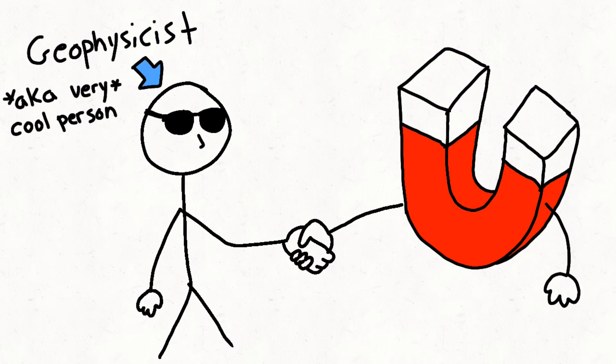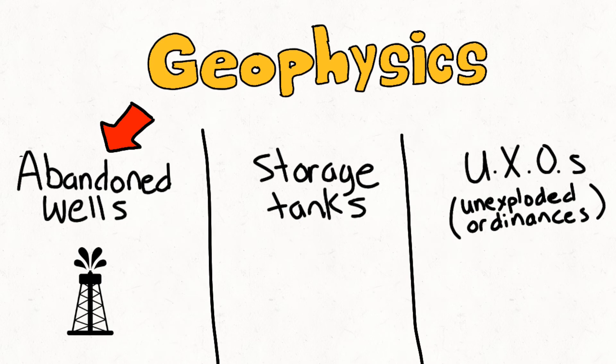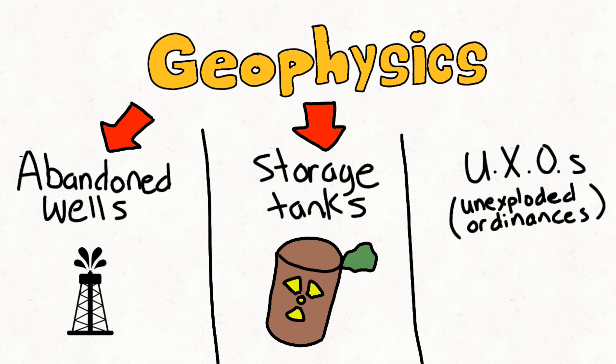Fortunately, geophysicists have found a way to use magnetism to locate abandoned wells and other buried environmental concerns such as pipelines, waste storage tanks, and unexploded ordinances.